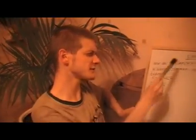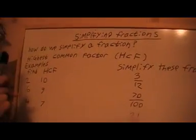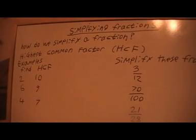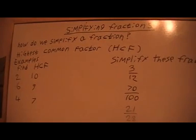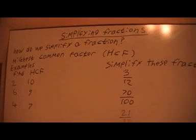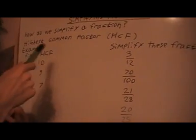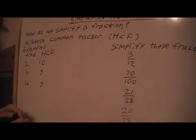In this video we're going to continue to work with fractions and learn how to simplify fractions. So the first question is, how do we simplify a fraction? To simplify a fraction, we'll find the highest common factor of both the numerator and the denominator, which is the top and the bottom, and divide them both by that factor. That simplifies them.